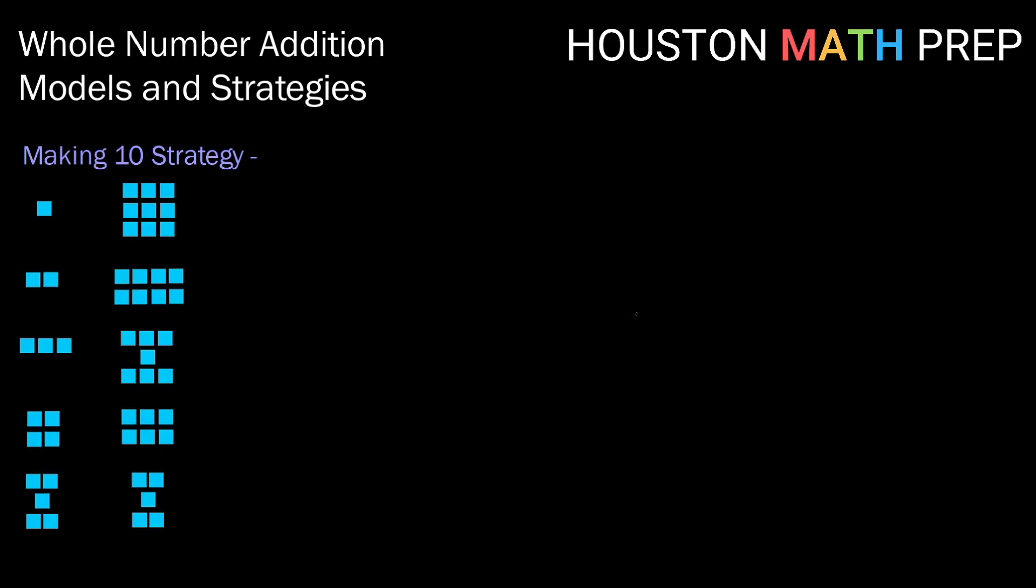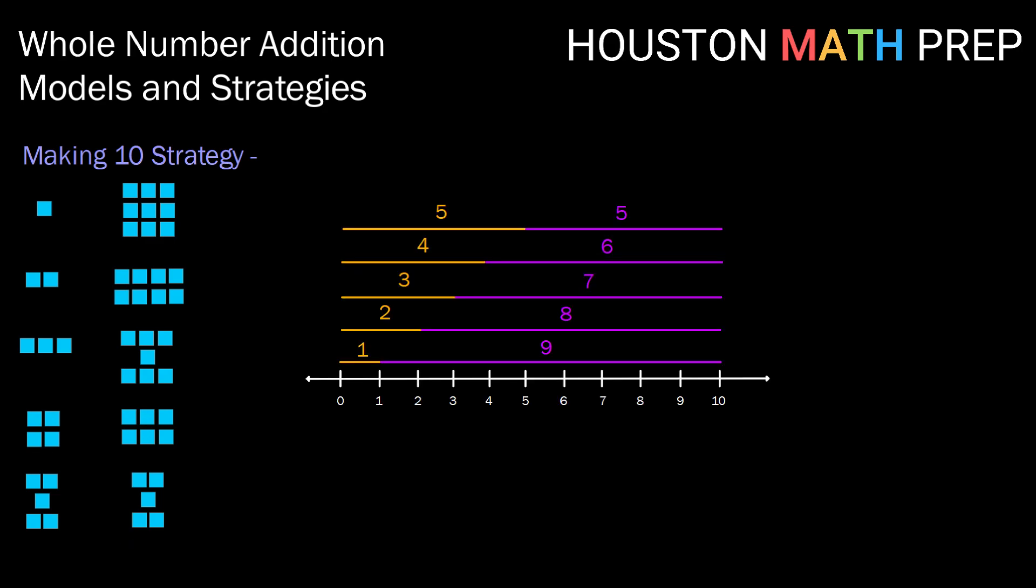Another strategy that we want to emphasize with students for addition in whole numbers is the strategy of making ten. We can start with working with students with manipulatives. Again, kind of going back to that concrete model. So recognizing that one block and nine blocks makes ten blocks and so on. We can also be doing kind of the same thing with a number line method, but just recognizing that one and nine make ten. Two and eight make ten. Three and seven. Four and six. Five and five. We want to recognize these pairs of numbers.